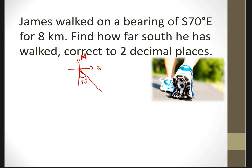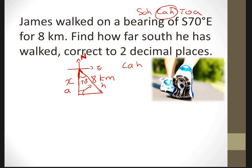Now connect these lines together and it becomes a triangle. The question asks you to find how far south, so we're looking for x. He walked 8 kilometers, which is the hypotenuse here. We've got adjacent and hypotenuse — so it's CAH, cosine. Therefore: cos of 70 degrees equals x over 8, the hypotenuse.